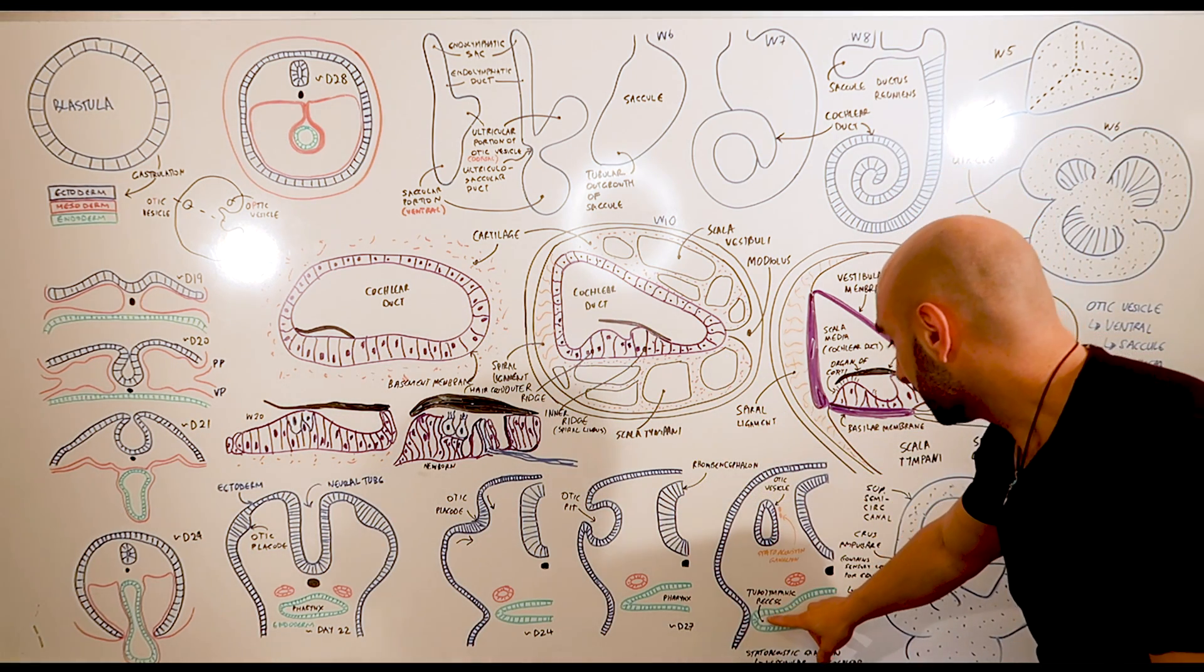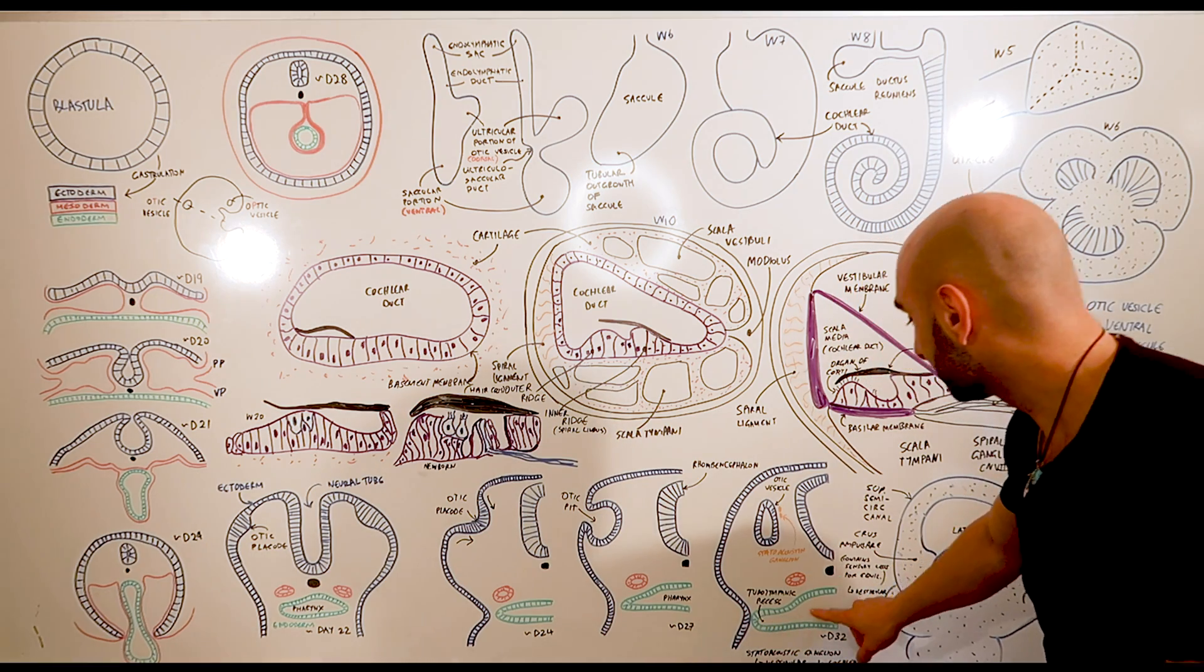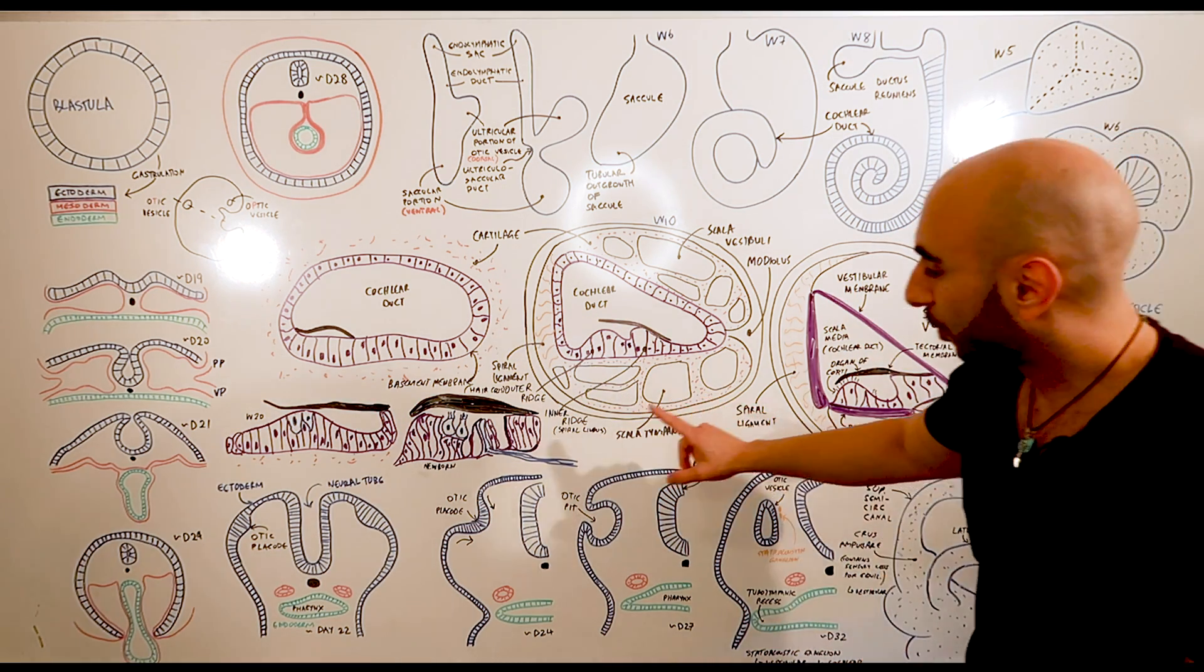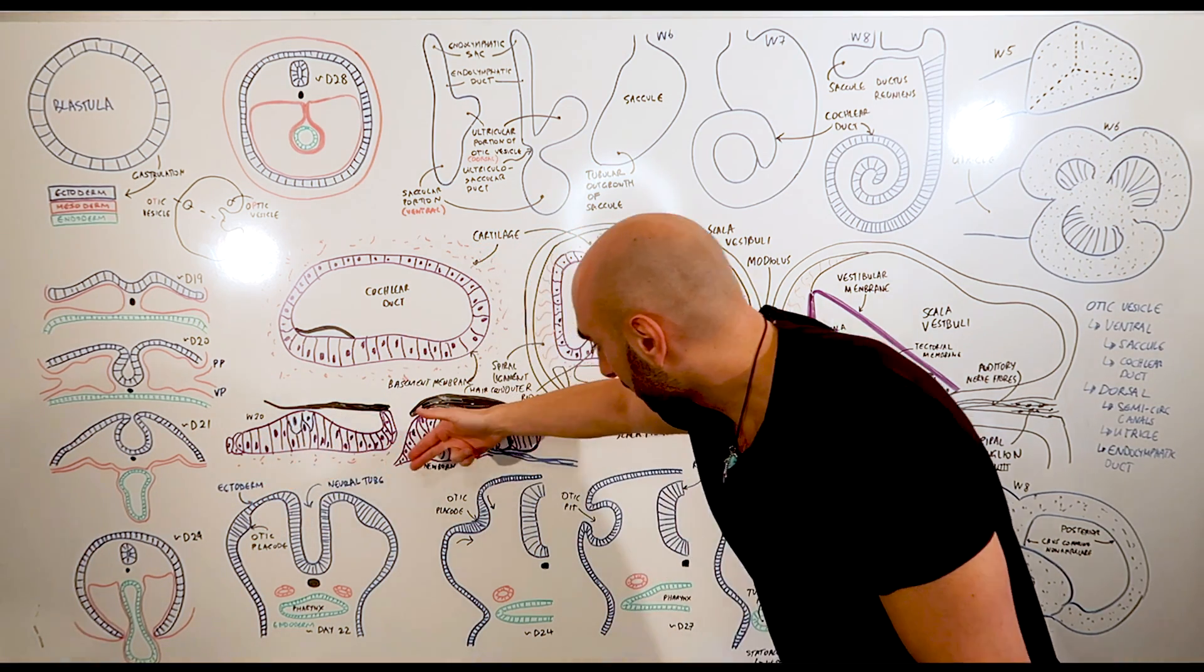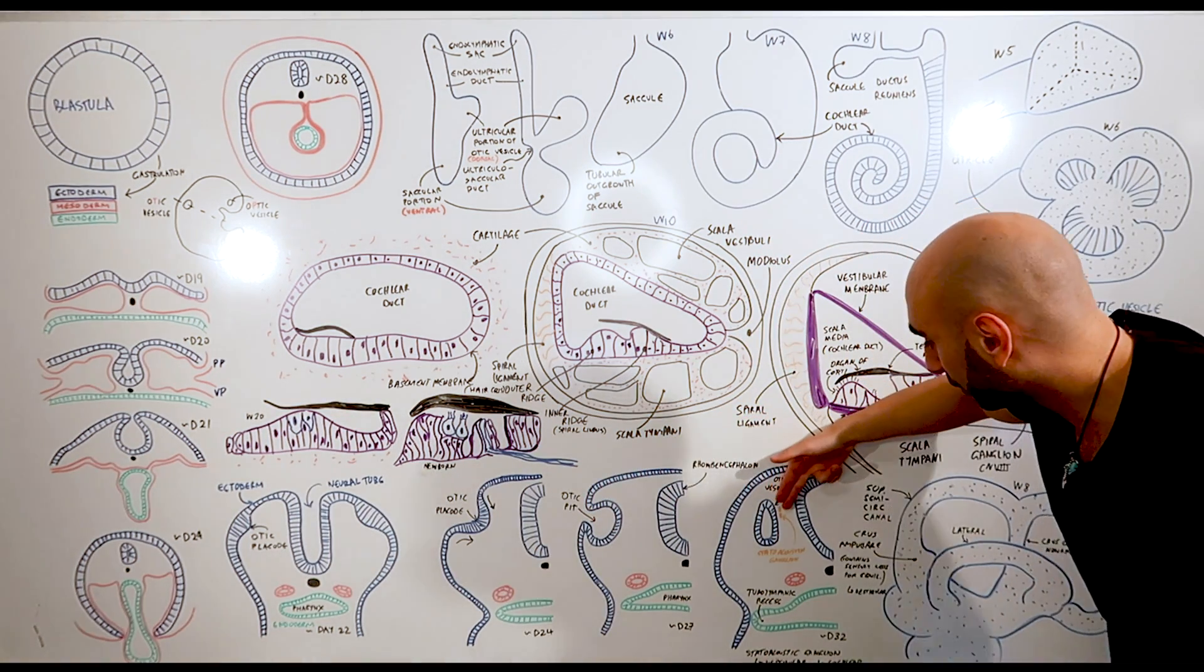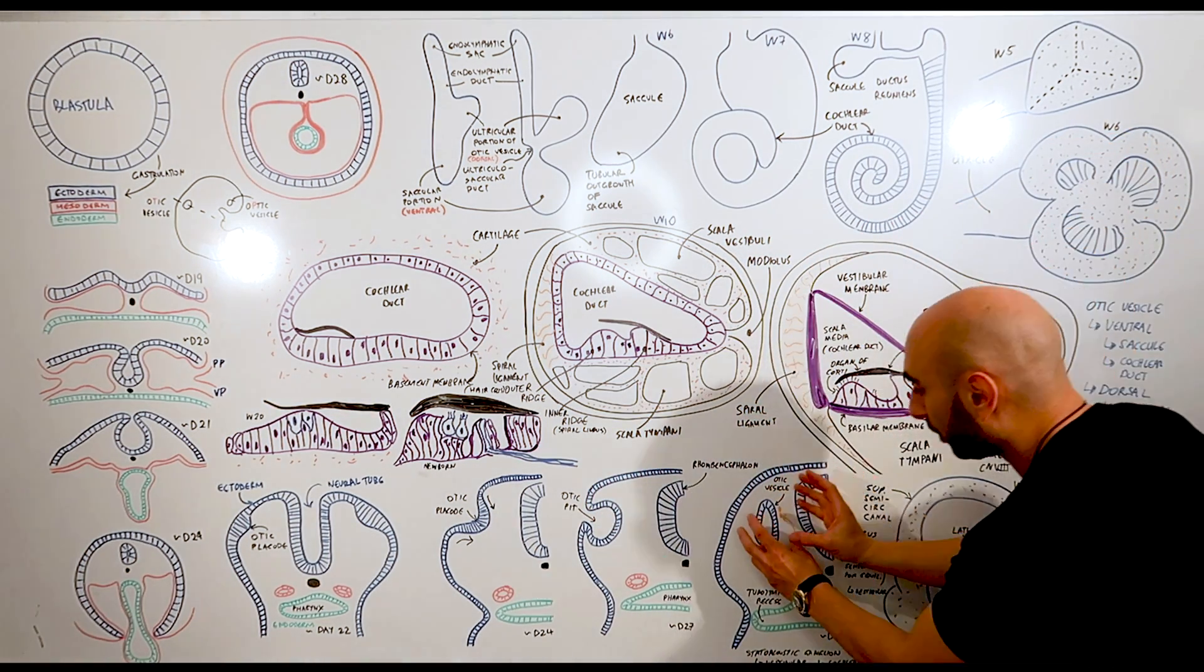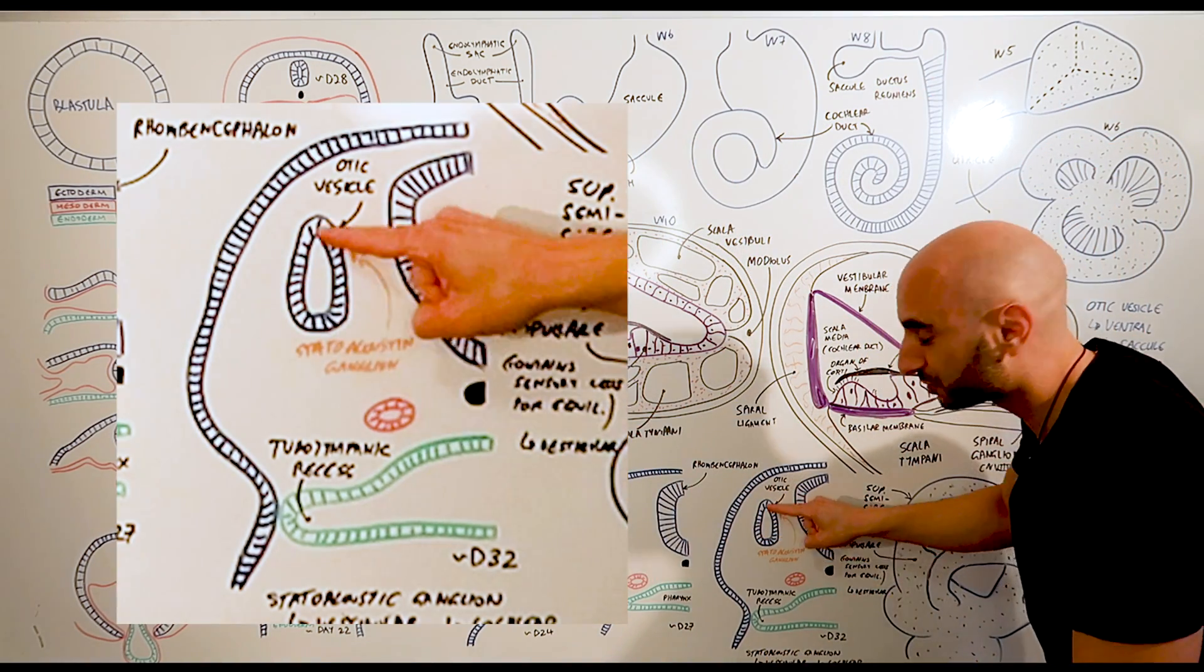We will see over here a tubotympanic recess in the pharynx, and all you'll need to know is that essentially the otic placode will thicken, invaginate, it becomes an otic pit and an otic vesicle is formed. All the rest of these drawings here is from this circle.